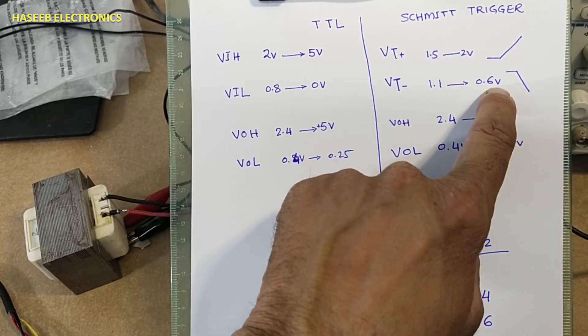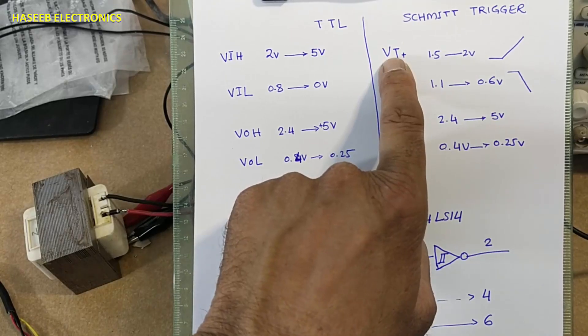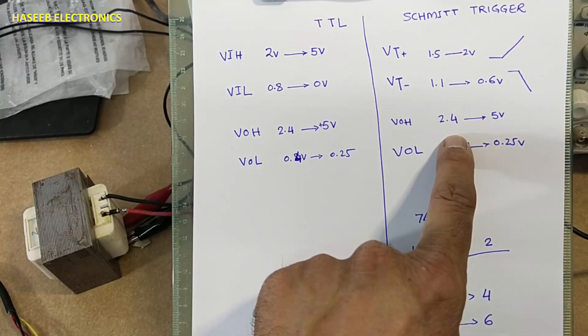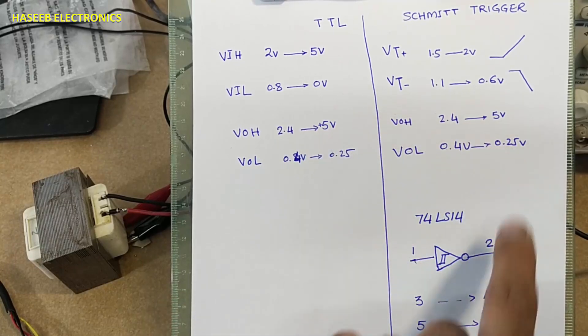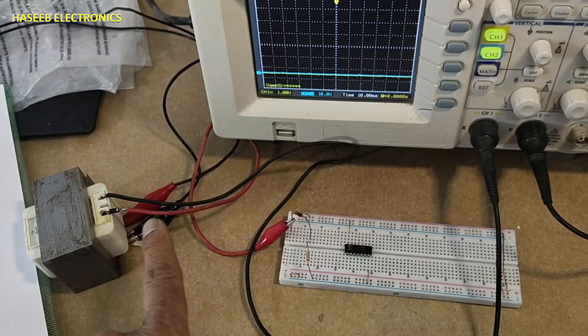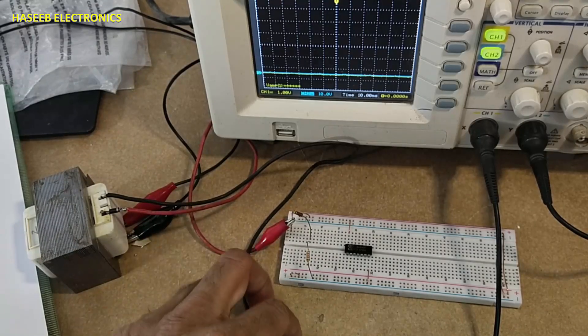And minimum level 0.6 volts - positive going threshold, negative going threshold. Output voltage are same as TTL. Here I have 5 volt peak from this transformer.